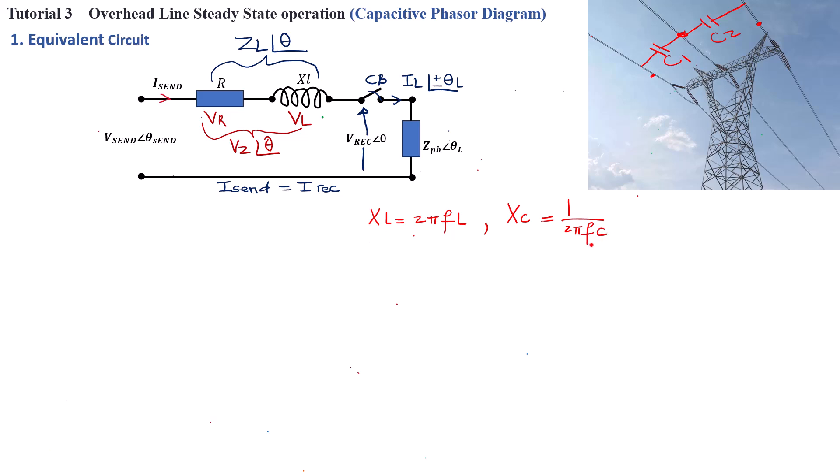then a low frequency of 50 hertz here is going to basically result in a high capacitive reactance. Compared if you have a high frequency circuit, then your XC, your capacitive reactance is going to be low if you have a high frequency.